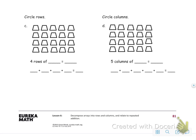Moving on, we have to circle rows — remember rows go back and forth — so you would circle each row, figure out how many are in each row, then the total, and then do the repeated addition. The next problem is circling columns — columns go up and down — go ahead and give that one a shot.